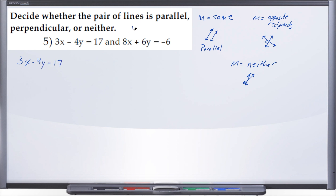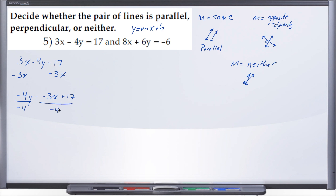We'll put 3x minus 4y equals 17 into y equals mx plus b. First, subtract 3x from both sides, leaving negative 4y equals negative 3x plus 17. Then divide both sides by negative 4, giving us y equals positive 3 over 4 times x minus 17 over 4. So the slope for this line is positive 3 over 4.